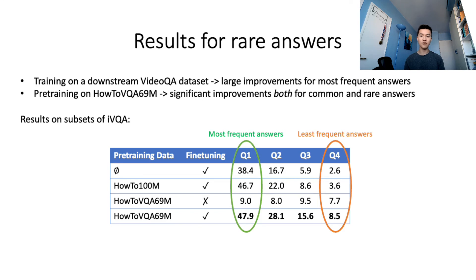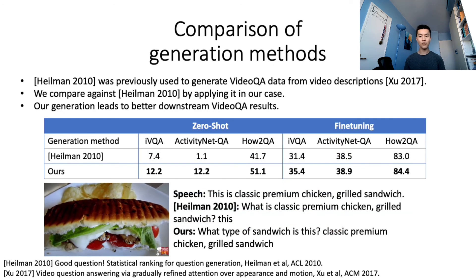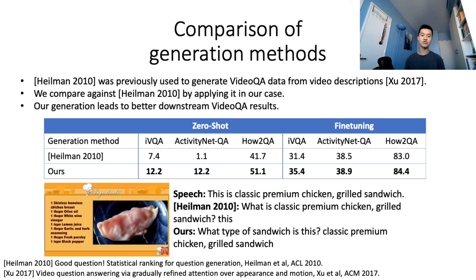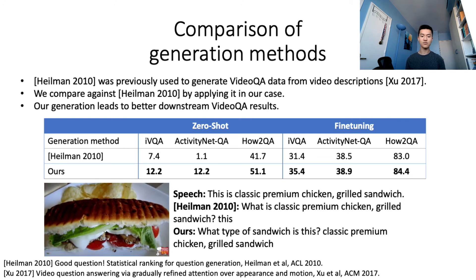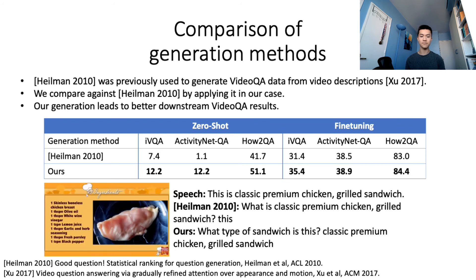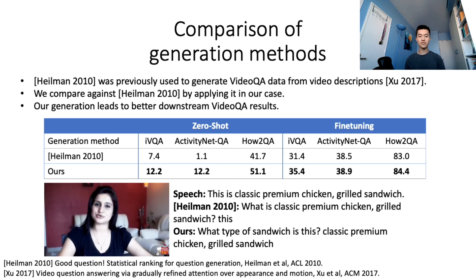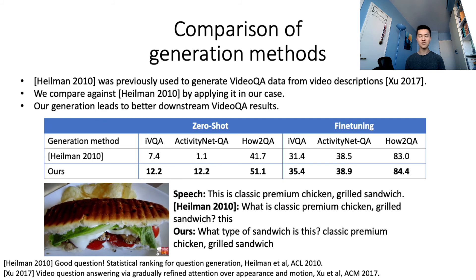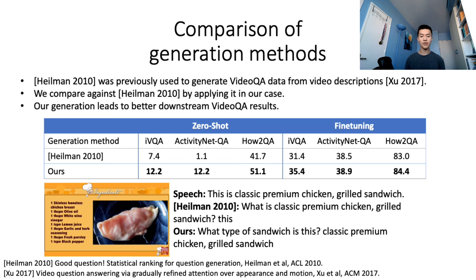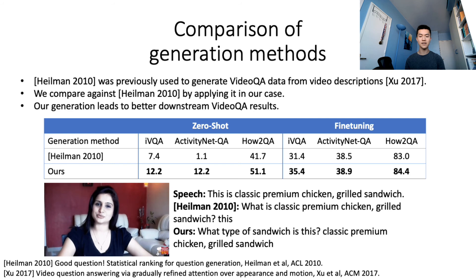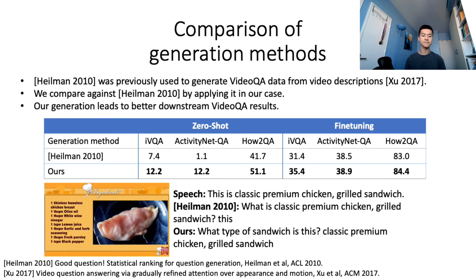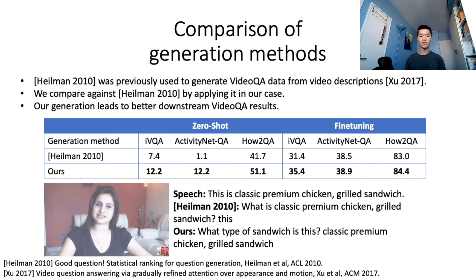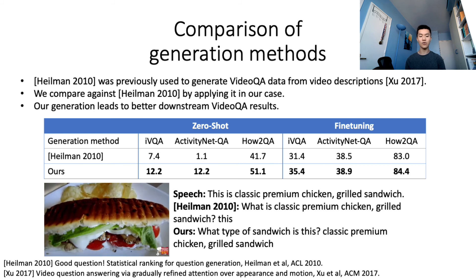We conclude that video QA-specific pre-training on additional large-scale diverse data helps improve generalization of video QA models. We further compare our question-answer generation approach to Elman et al., notably used to generate video QA data from manually annotated video descriptions in previous work. Running their method on sentences extracted from HowTo100M and applying our pre-training method, we find our generation method leads to significantly better downstream performance in both zero-shot and fine-tuning settings. Qualitatively, our neural generation method provides higher quality and higher diversity of QA pairs compared to the rule-based approach from Elman et al., when applied to uncurated sentences from speech in narrative videos.